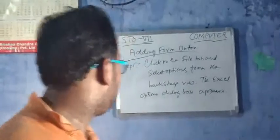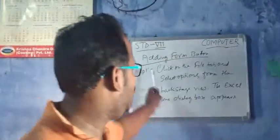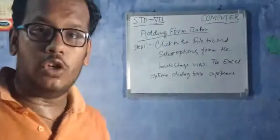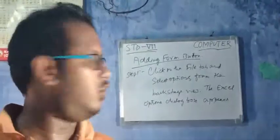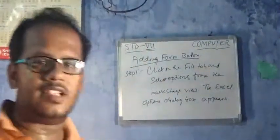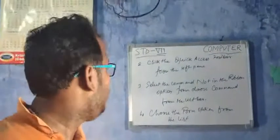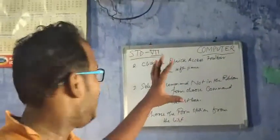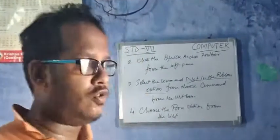Now, how to add form buttons. Step 1: click on the File tab — present in every application software. Go to the Options selection in the backstage view. The Excel Options dialog box will appear. Step 2: click on Quick Access Toolbar on the left pane. Step 3: select the command 'Not in the Ribbon' option from the 'Choose Commands From' list box.